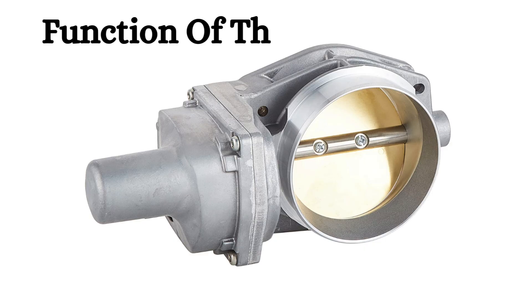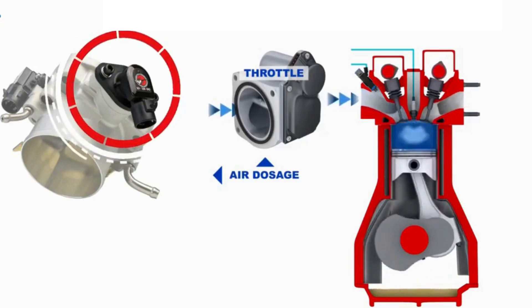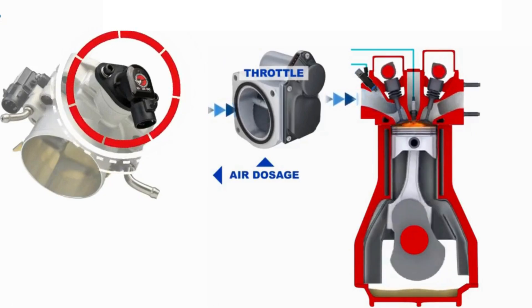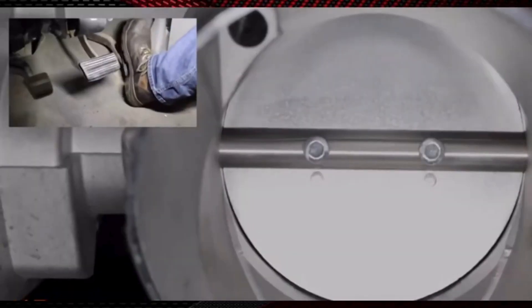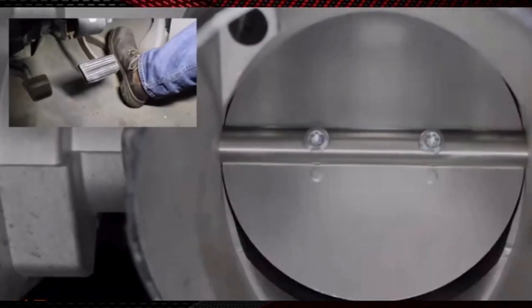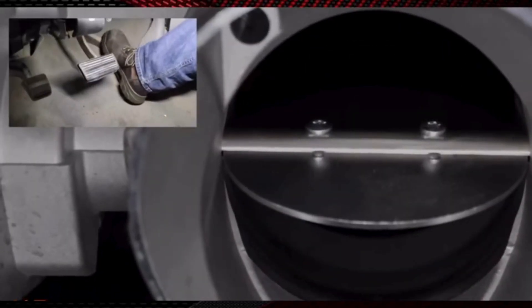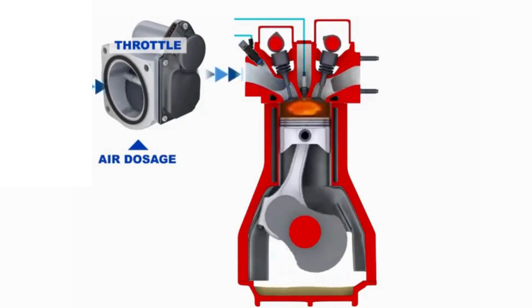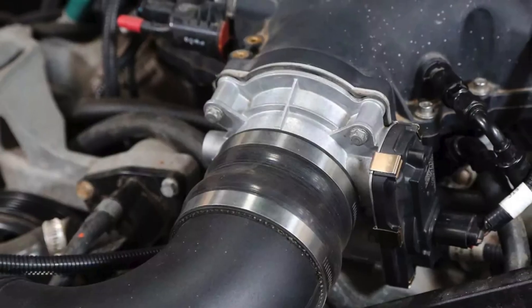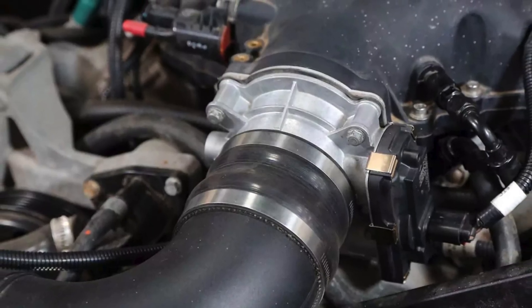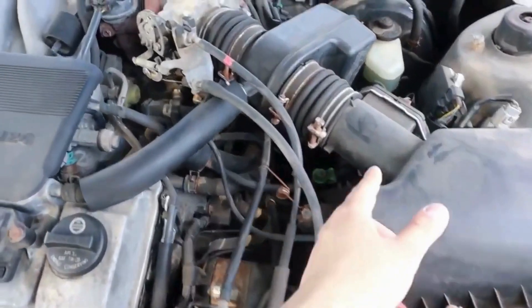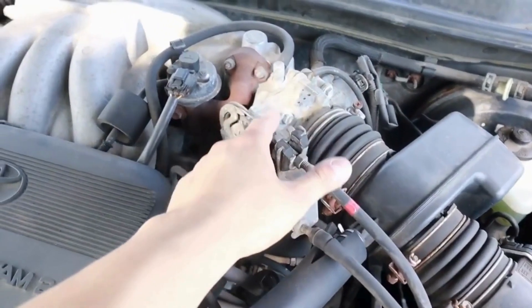First, let's understand the function of throttle body. The throttle body controls the amount of air that enters the engine. When you press the gas pedal, the throttle valve opens to allow air into the engine, which then mixes with fuel to create combustion. The throttle body is typically located between the air intake system and the intake manifold in a vehicle's engine. It is usually positioned at the entrance of the intake manifold.